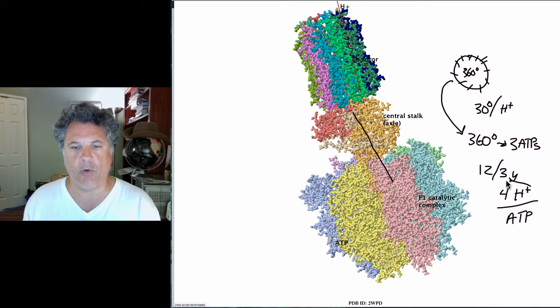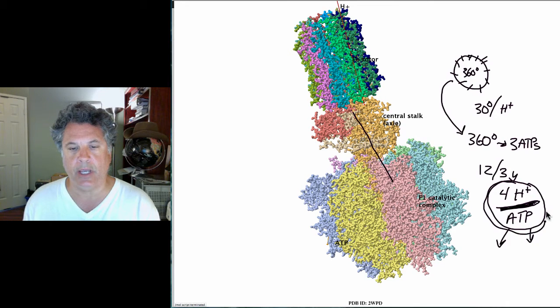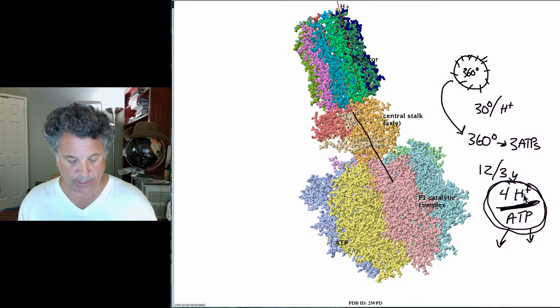We need four hydrogen ions per ATP that is produced. Now shortly we'll look at how the NADH and the FADH2, which are the cause of the pumping of hydrogen ions into the intermembrane space, relate to ATP production and how that accounting all works out.